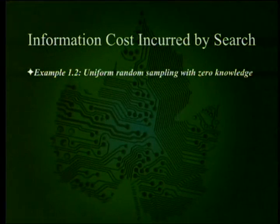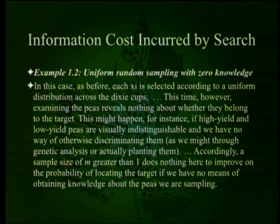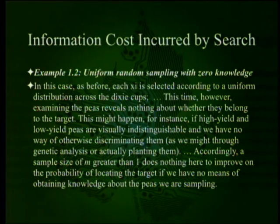Uniform random sampling with zero knowledge: each x_i is still selected by uniform distribution across the Dixie Cups. This time, however, examining the peas reveals nothing about whether they belong to the target — for example, if high-yield and low-yield peas are visually indistinguishable. A sample size of m greater than 1 does nothing here to improve the probability of locating the target if we have no means of obtaining knowledge about the peas we are sampling.